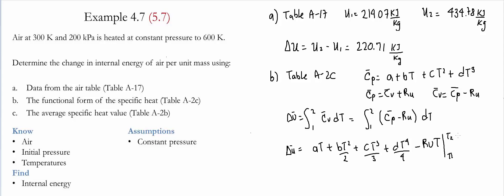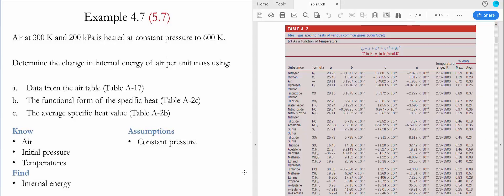Now we go to the table A2C to find the values from A, B, C, and D. For A, we see that it equals 28.11. For B, it's equal to 0.1967 times 10 to the negative 2.